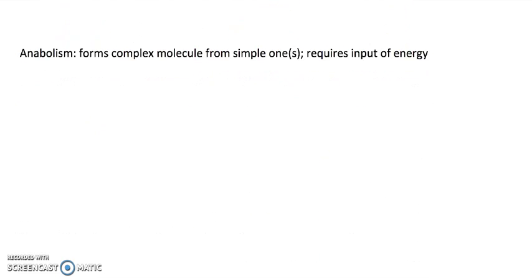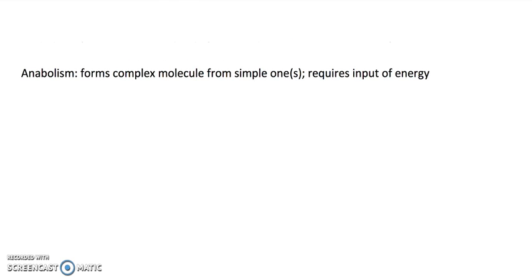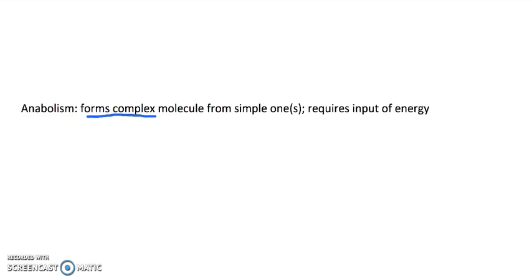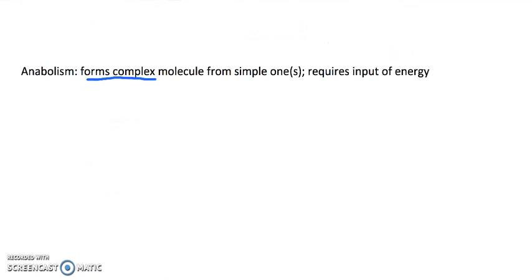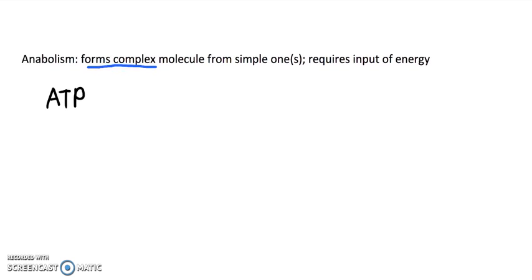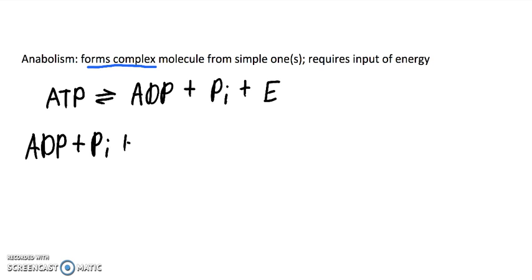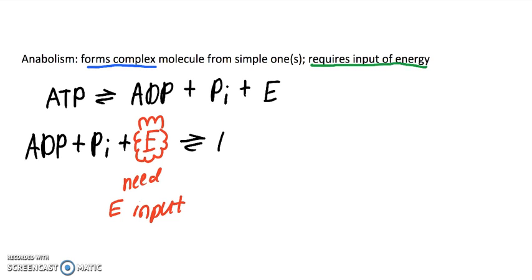Now anabolism is the opposite. We form a complex molecule from simpler ones. So you take, what's a good example here, we can take - example here would be ATP. So we know ATP, when this breaks down into ADP plus an inorganic phosphate, this releases energy. But this right here, this is a catabolic reaction. To stuff those pieces together going the other way, we need an input of energy. So we need energy input to stuff these two pieces together.